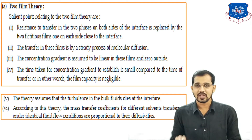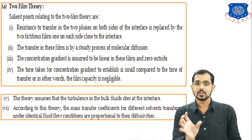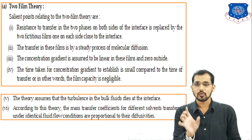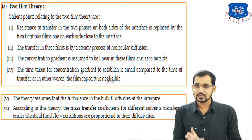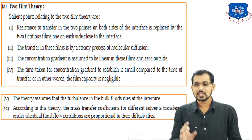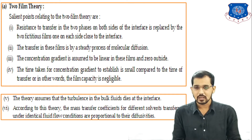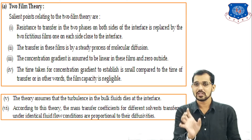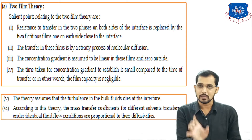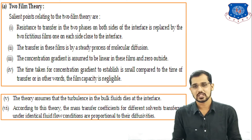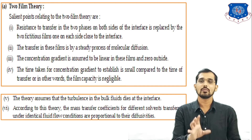Third point is the concentration gradient — the difference in concentration in the two phases. A concentration gradient of component A is a must for mass transfer to occur. The concentration gradient is assumed to be linear in the film and zero outside. Mass transfer takes place only in the films because the concentration gradient exists only in the gas film and liquid film, in linear form.